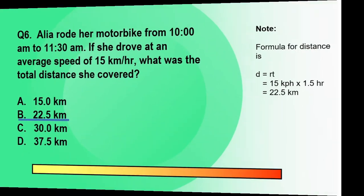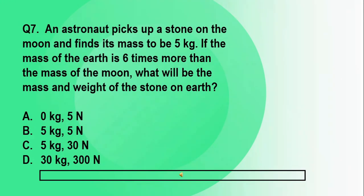Let's move to question number seven. An astronaut picks up a stone on the moon and finds its mass to be 5 kilograms. If the mass of the Earth is 6 times more than the mass of the moon, what will be the mass and weight of the stone on Earth? A. Zero and 5 newtons. B. 5 kilograms, 5 newtons. C. 5 kilograms, 30 newtons. Letter D. 30 kilograms, 300 newtons.